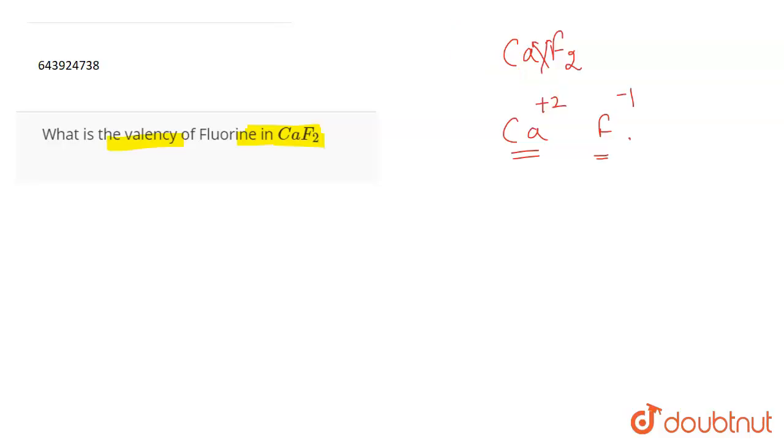So this is one approach where you can interchange the subscripts and then you can get the valency. Because now if you get the valencies and then you interchange, you are going to get the same formula, which implies that this is correct. So the valency of calcium is plus two and the valency of fluorine is minus one.